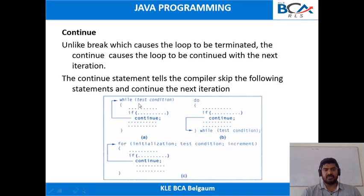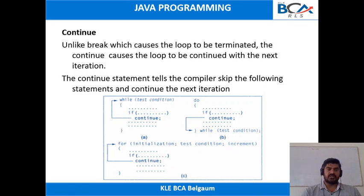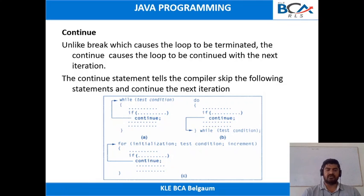Inside a while loop, again we have an if condition. If this condition is satisfied, after that we have a continue statement. If this condition is evaluated to true, it will execute the continue statement, meaning the control is transferred back to the while loop. The execution of the following statements will be skipped — those statements will not be executed. This is how continue works with respect to the while loop.